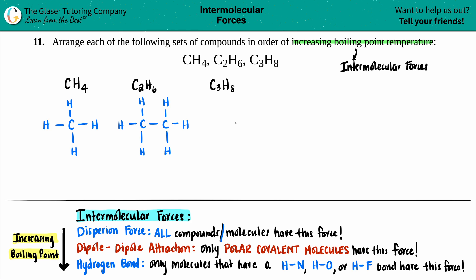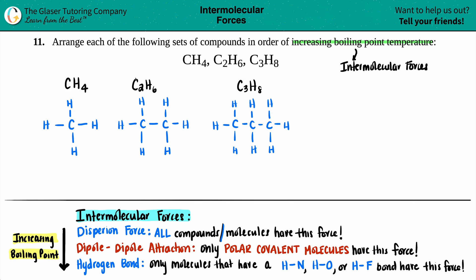And then C3H8: I now have three carbons strung together, with two hydrogens in the middle and three hydrogens on both ends, bringing you to a total of eight hydrogens. Now let's make this look nice and we'll put CH4, C2H6, and C3H8 on screen.